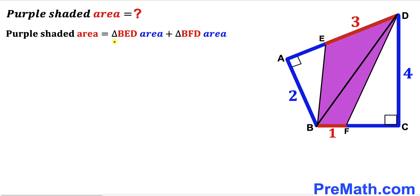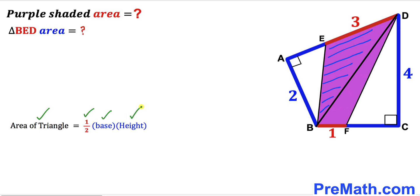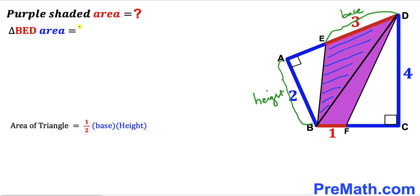Our task is now to calculate the area of triangle BED and the area of triangle BFD. Let's first focus on triangle BED. Recalling the area of a triangle formula: area equals one-half times base times height. For triangle BED, the base is DE, and the height is AB.